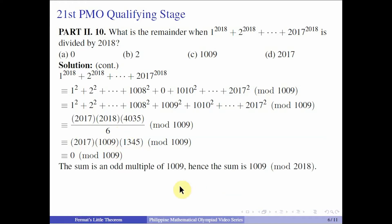What we have here is that the sum is an odd multiple of 1009. So therefore, when we divide it by 2018, the sum should be 1009 modulo 2018. Therefore, the answer here is letter C, 1009.